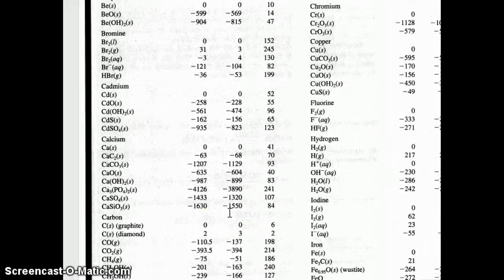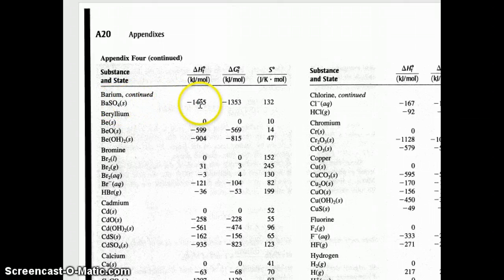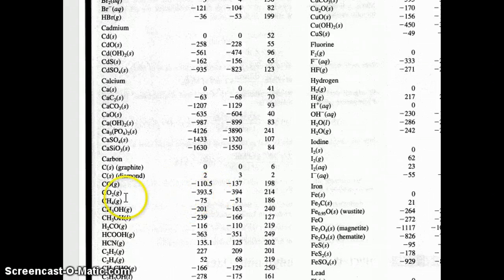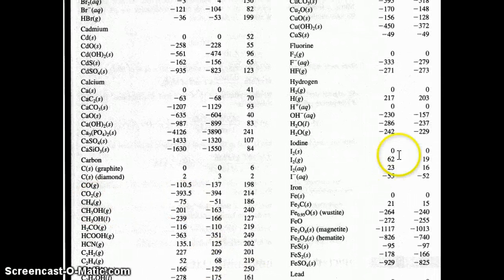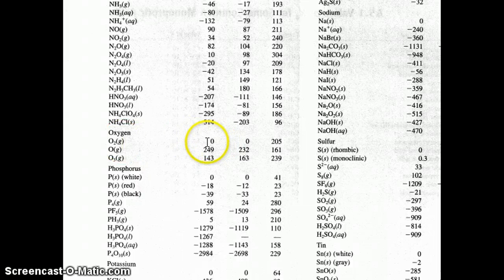Clicking that link shows a table from a textbook appendix with ΔHf° values given in kilojoules per mole. For example, barium sulfate is −1465 kJ/mol, and beryllium solid is zero. For the compounds we wrote formation reactions for earlier: CO is −110.5 kJ/mol, CO₂ is −393.5 kJ/mol, CH₄ (methane) is −75 kJ/mol, liquid water is −286 kJ/mol, and for oxygen — the element — the enthalpy of formation is zero.